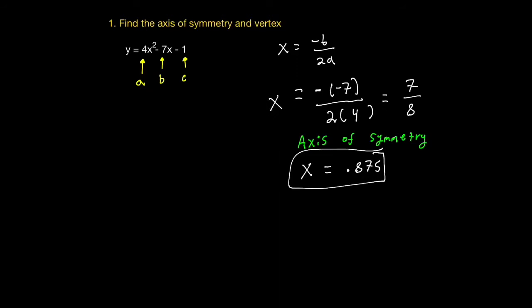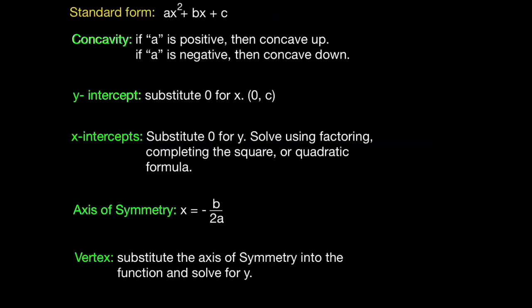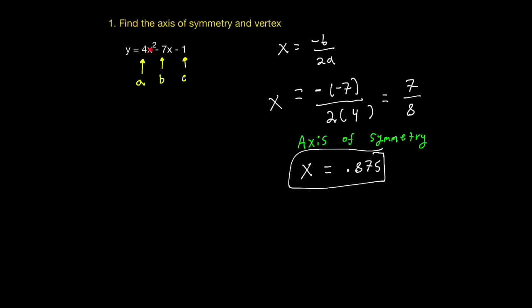Now that we have the axis of symmetry, to get the vertex, all we have to do is substitute the axis of symmetry into the function and solve for y. Everywhere I see an x, I'm going to replace it by 0.875. So I'll have y equal to 4 multiplied by 0.875 squared minus 7 multiplied by 0.875, and then we subtract 1. Because we have decimals, it might be useful to use a calculator — you can use Desmos, a TI-30, or your phone.